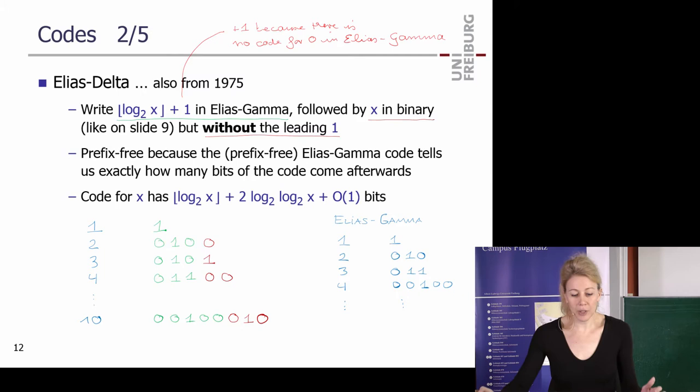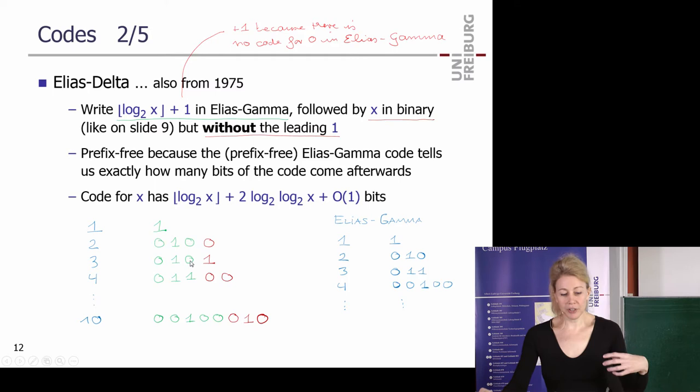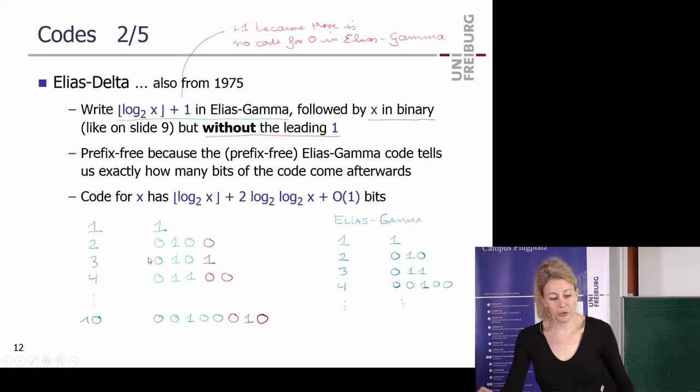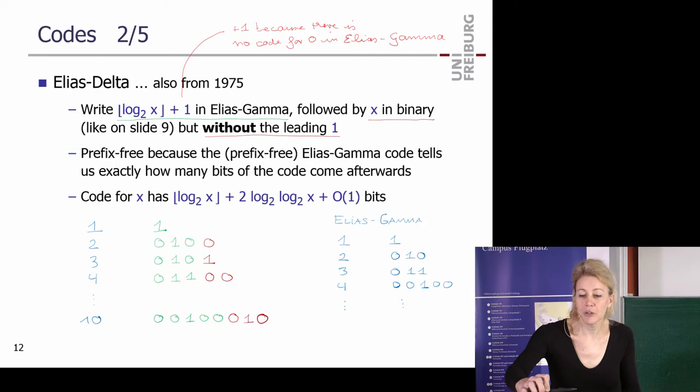Why is Elias Delta prefix-free? The green Elias Gamma prefix is itself prefix-free, so you know when it ends. Decoding that prefix gives you the number of bits that follow. You don't need the leading one in the red part because the prefix-free green part already tells you where to stop. Any questions about this?